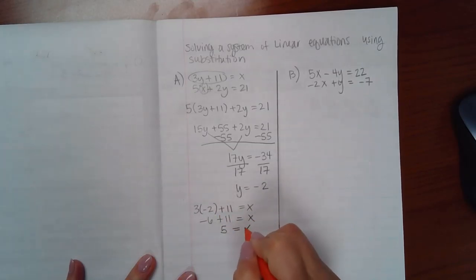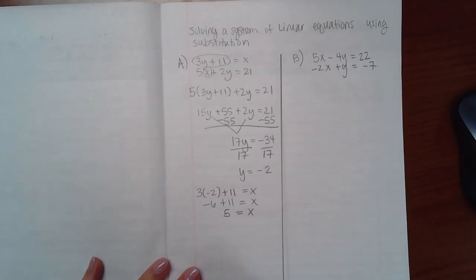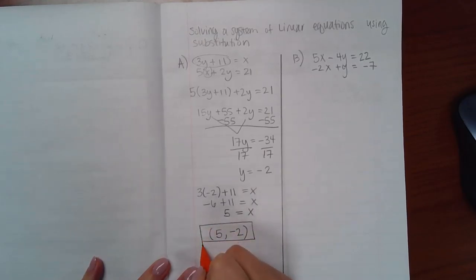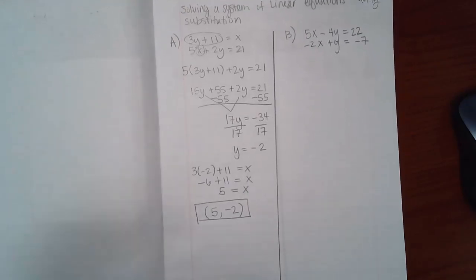And after all of the computation, you figure out that x is actually equal to 5. So the solution here will be the point, x value comma y value. And that is the solution to the system of equations.